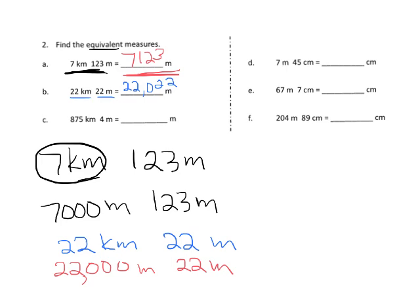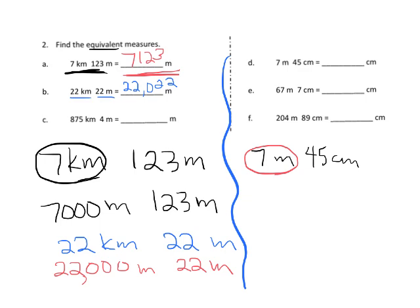Let's skip to problem D: 7 meters plus an extra 45 centimeters, and we're supposed to turn that into centimeters only. Each meter is equal to 100 centimeters, so instead of 7 meters we have 700 centimeters, plus the 45 centimeters we already had, giving us 745 centimeters.